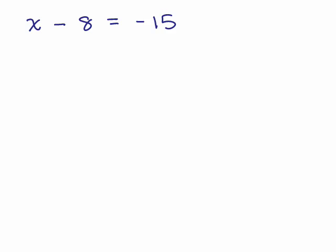All right, here's another problem. x - 8 = -15. Some of you might be able to do this in your head, but we want to do it using the addition property of equality. So look what happened. You started with the variable x, and you subtracted 8. So you want to undo that.